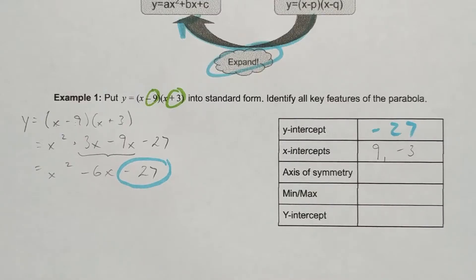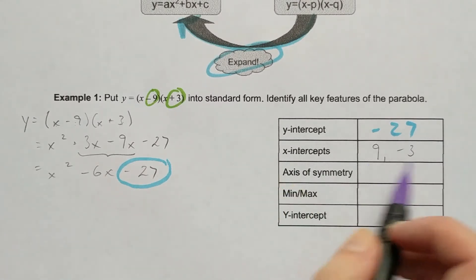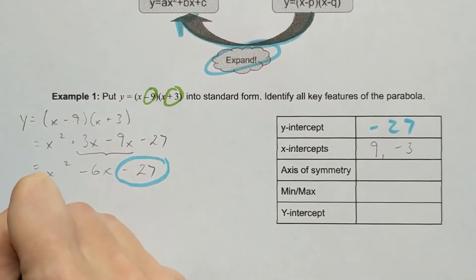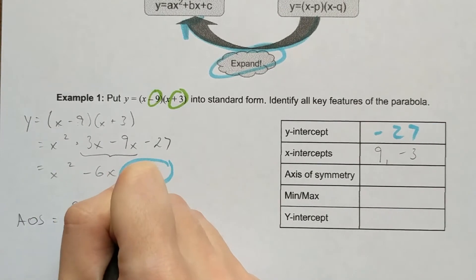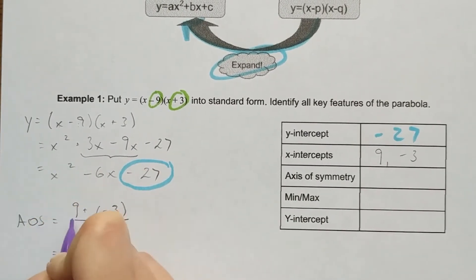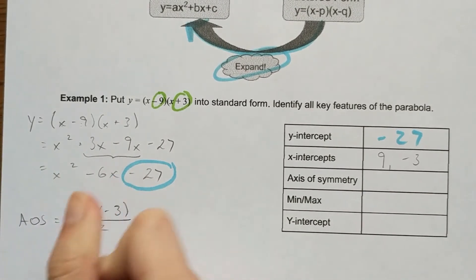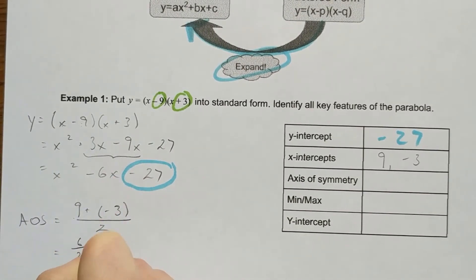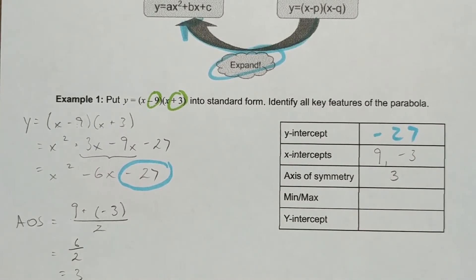The axis of symmetry is located at the halfway point between the x-intercepts 9 and -3. I find that by calculating (9 + (-3)) ÷ 2. That's 6 divided by 2, which is 3. So my axis of symmetry is located at x = 3.